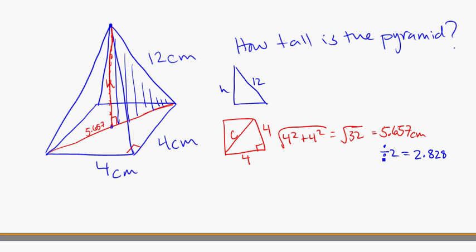So that I get 2.828 roughly. And this is this bit here, half of that distance across the bottom. 2.828 there.